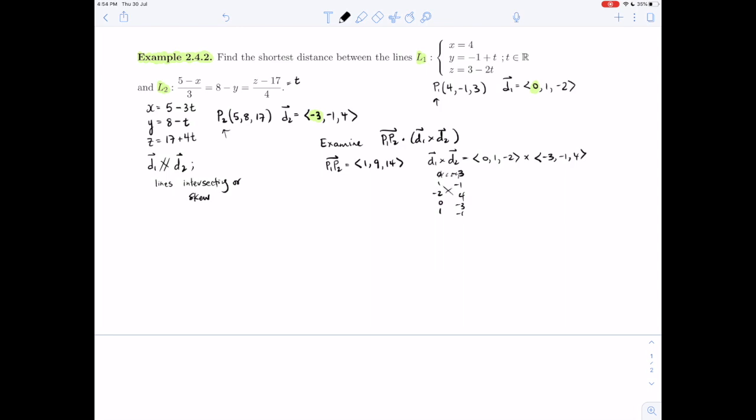And what do we get? We get 4 minus 2, so that is 2. And then 6 minus 0, and then 0 minus minus, so 0 plus 3.